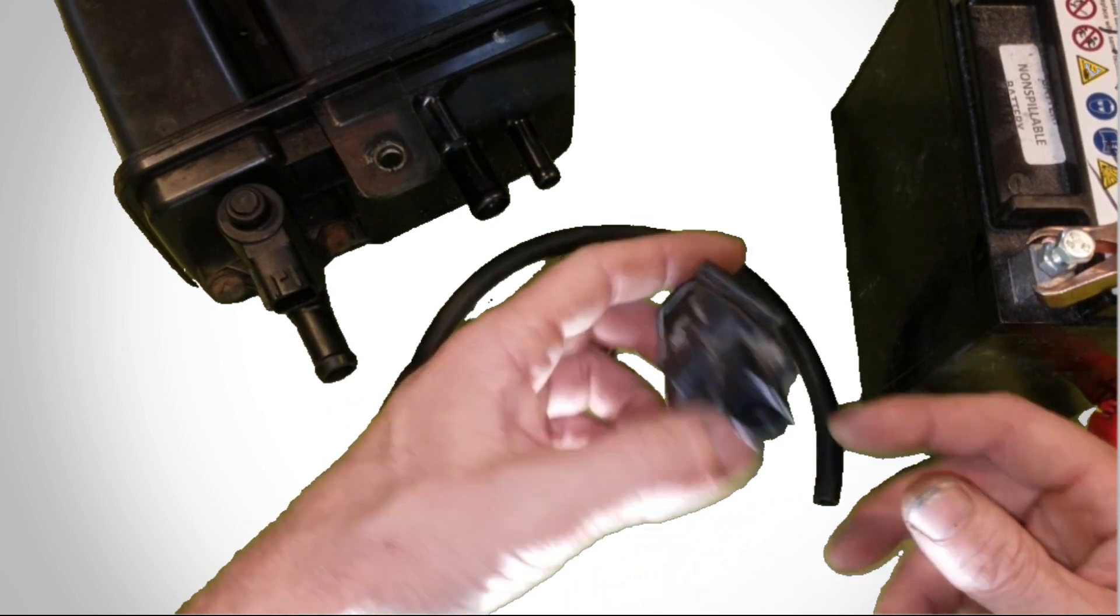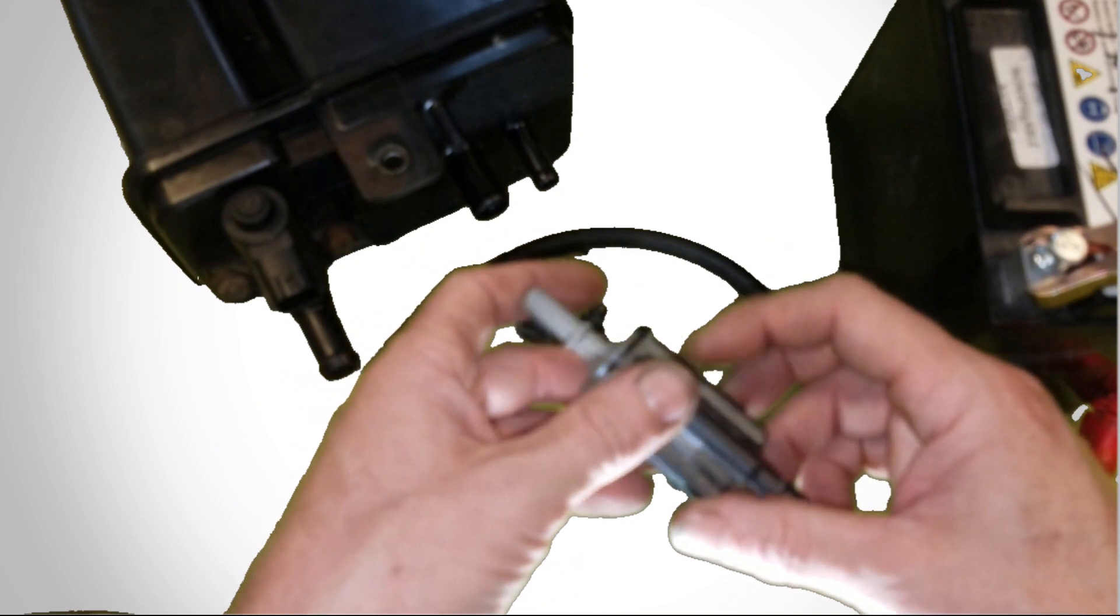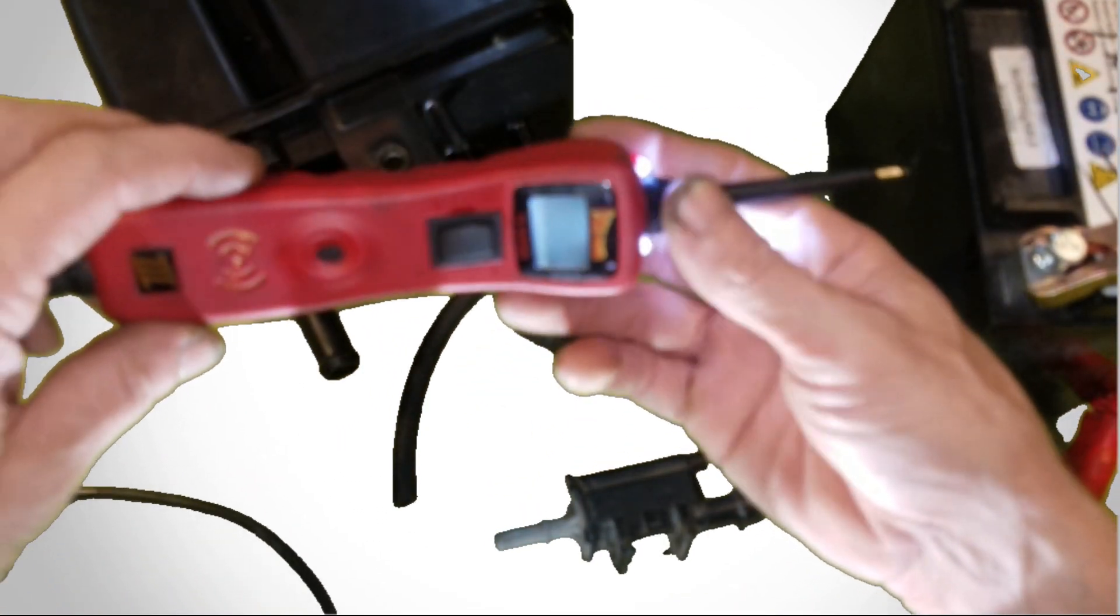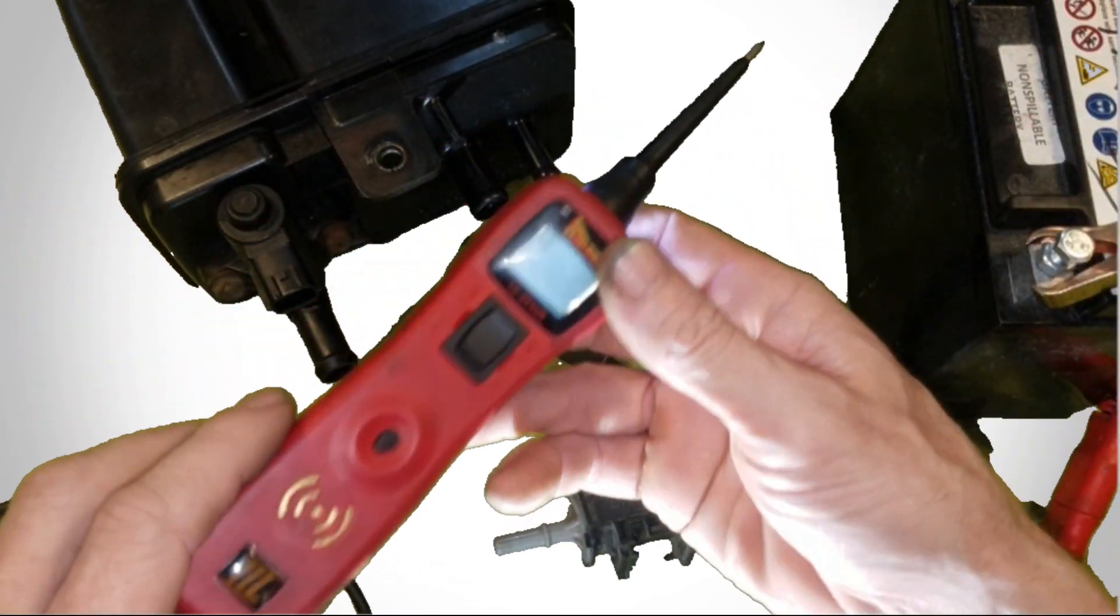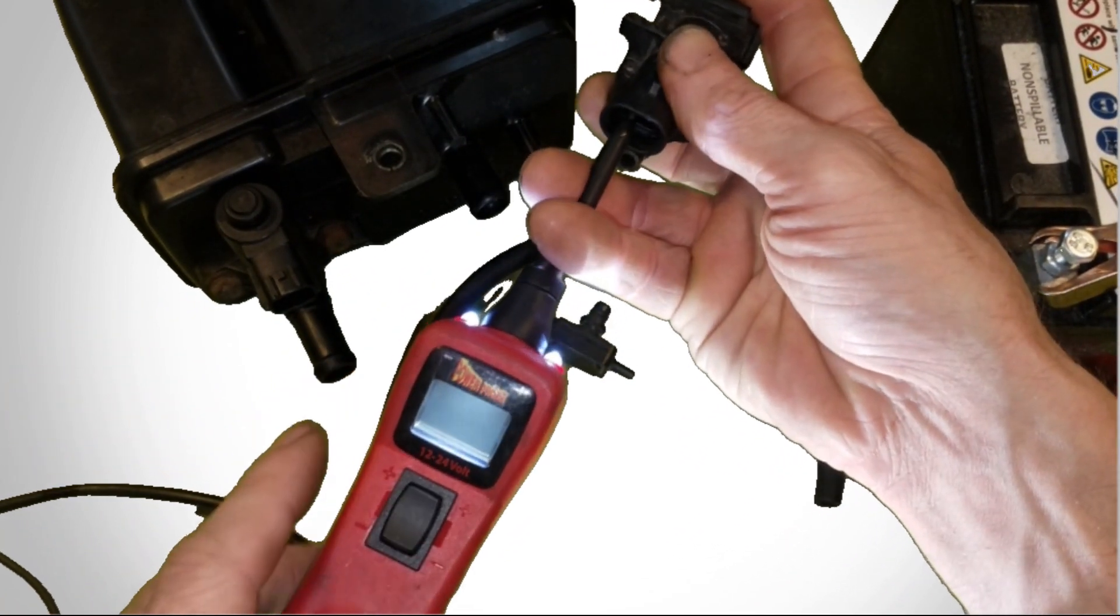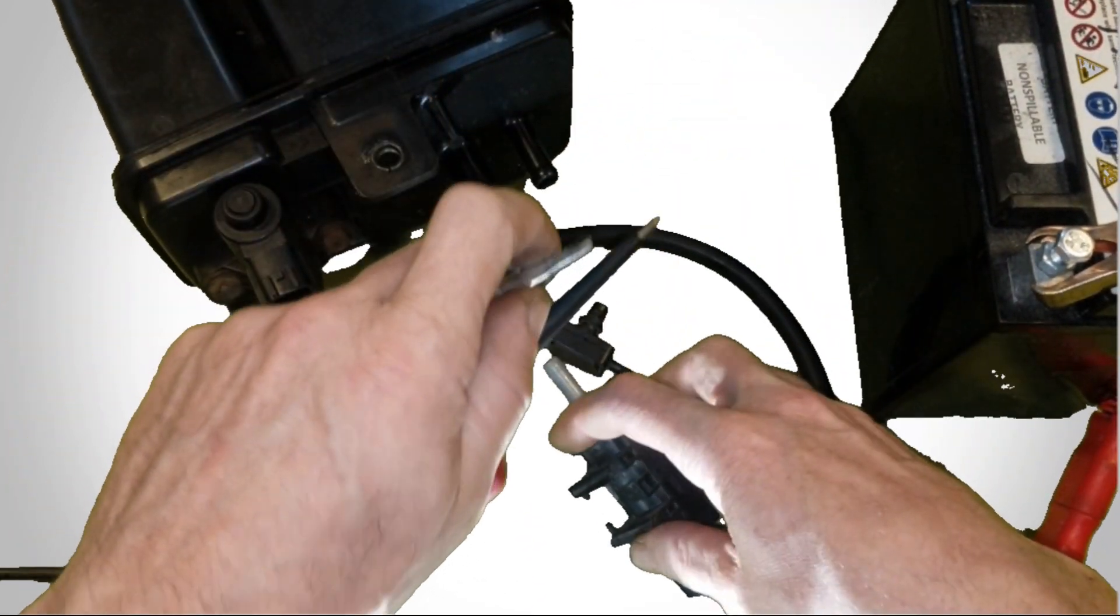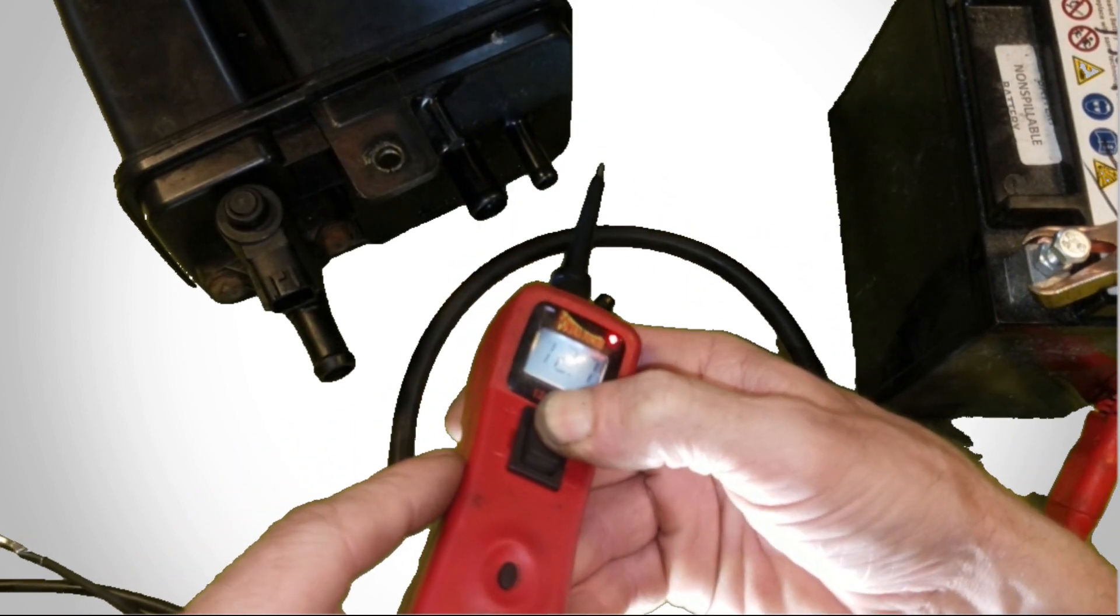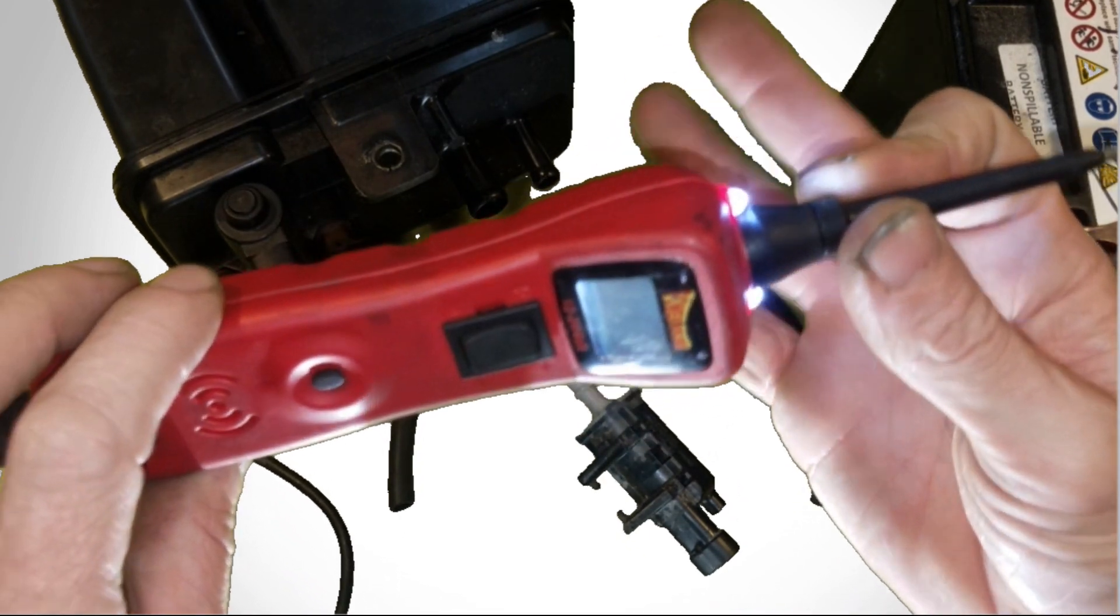If you have purge valve problems you're usually going to set like a P0446. But like I said, all these things are relatively easy to test. This little guy comes in real handy, a power probe like I said. You just hook it to the battery, it can test for power and ground, it can test for continuity. Like I can tell right off the bat just by putting this on here if I have continuity or not because it will light up green, and I can just apply power to it and it will activate. These things are pretty handy. I'll also leave a link in the video description below.